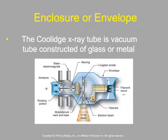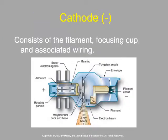The Coolidge x-ray tube has a vacuum generally constructed out of glass, housed within a glass envelope — think of it like a light bulb. On the cathode side, that consists of the filament, the focusing cup, and associated wiring from the step-down transformer. The step-down transformer powers that cathode to begin thermionic emission, which starts to produce heat, boiling off electrons and producing a space charge effect.